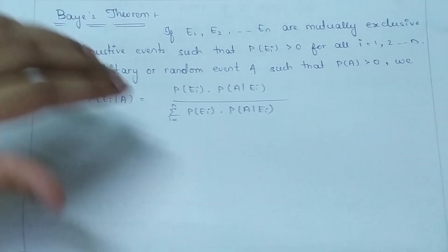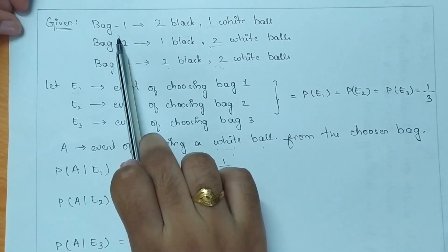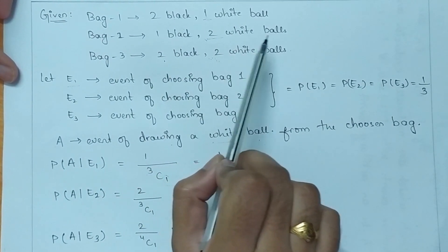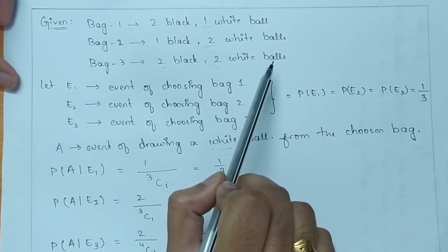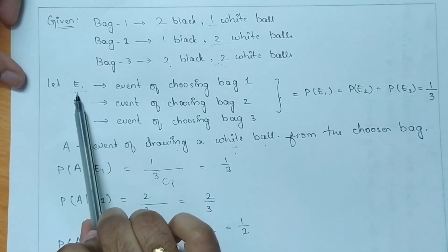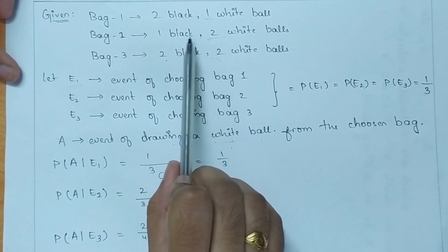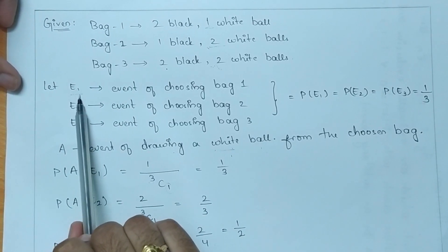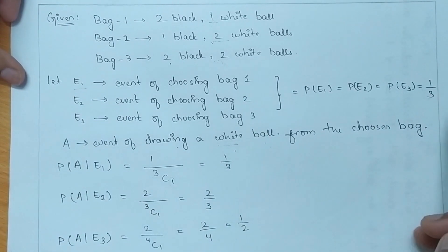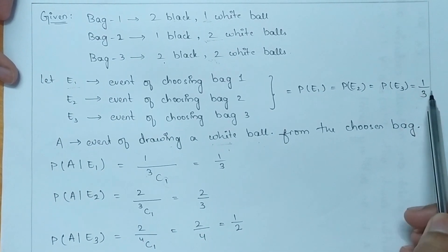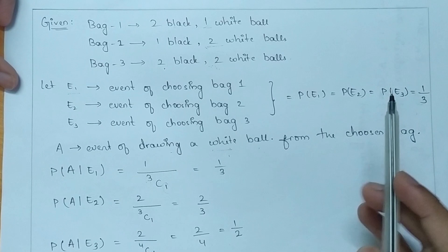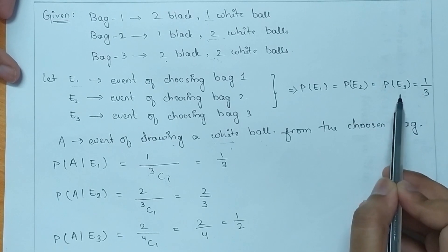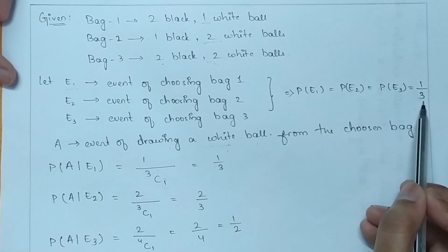Bag 1 contains 2 black and 1 white ball. Bag 2 contains 1 black and 2 white balls. Bag 3 contains 2 black and 2 white balls. Let us consider event E1 of choosing bag 1, event E2 of choosing bag 2, and event E3 of choosing bag 3. The probability of choosing any one of these 3 bags is equal to 1/3, which implies P(E1) = P(E2) = P(E3) = 1/3.